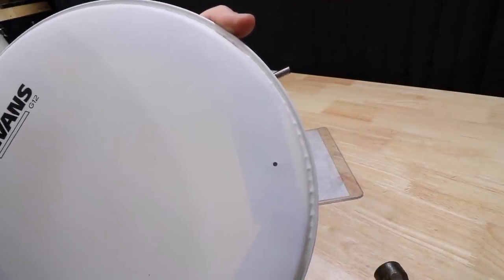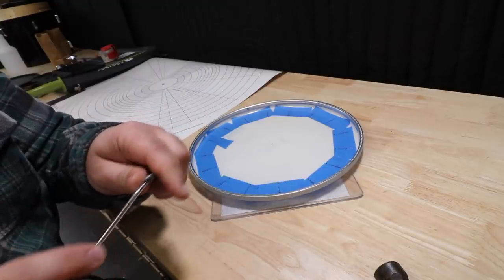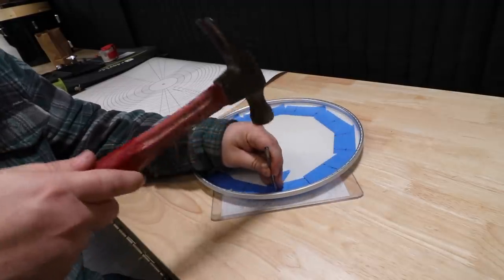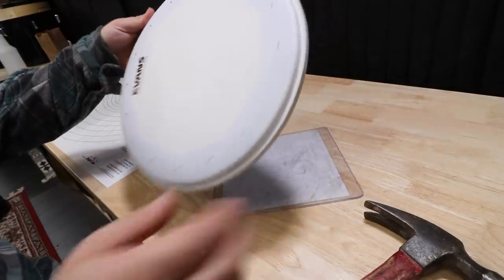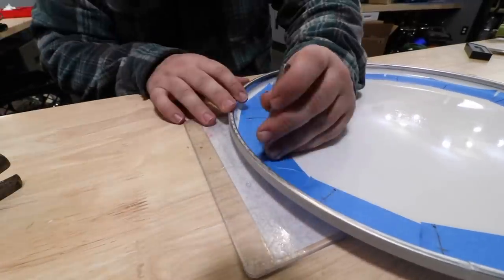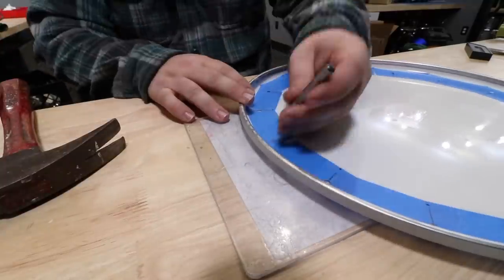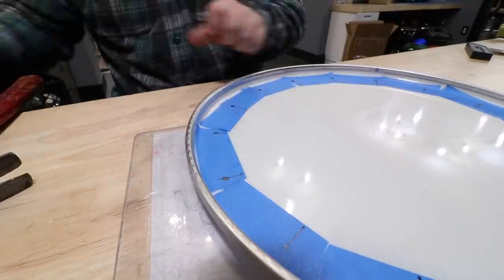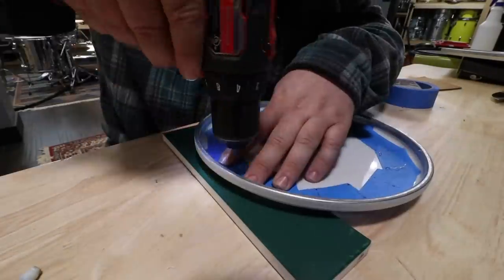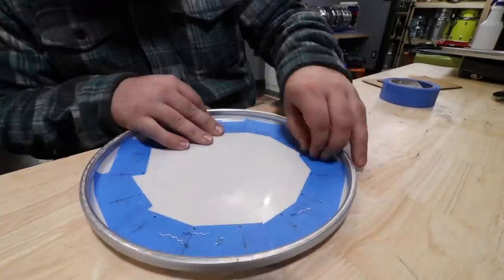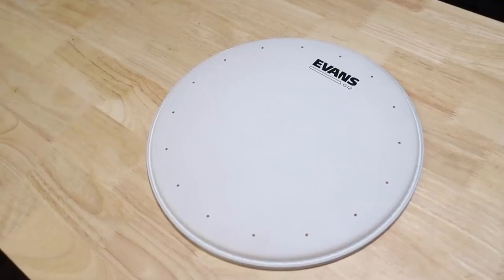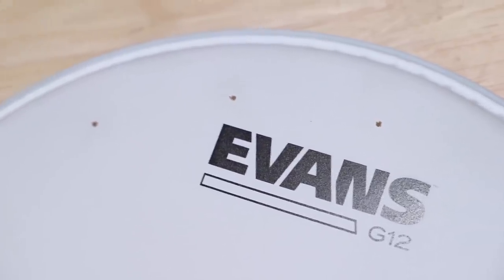Then you just go around and punch out all the holes, making sure to remove the plug after each one. And there you go. That's how you turn any drum head into an HD-Dry. And there you go.